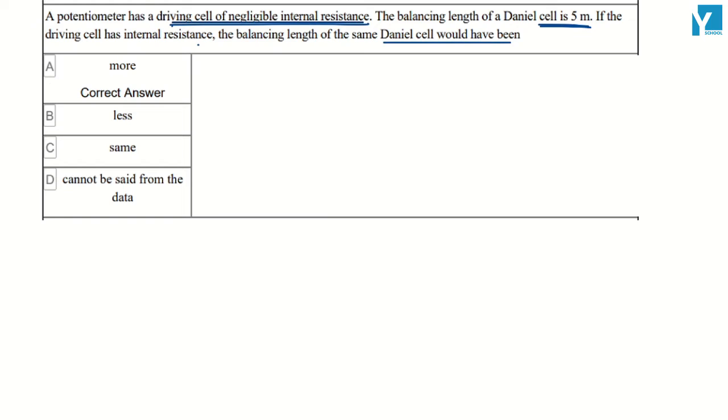A simple thing is that if your driving cell has internal resistance, then the balancing length will be different. A simple explanation is that you can imagine with a diagram.